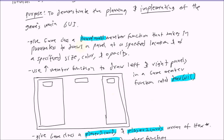I'm going to give the game class a drawPanel member function. This member function will be responsible for drawing a single panel wherever you tell it to, so it's going to take some parameters. I'm also going to give the game class a drawGUI member function. This member function will use the drawPanel member function to basically draw the entire GUI — it will call drawPanel for each panel.